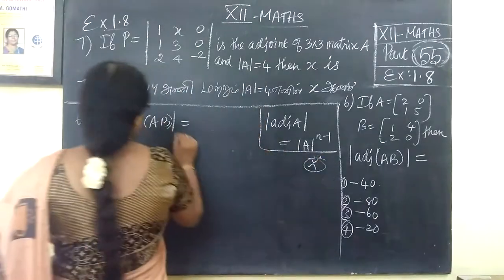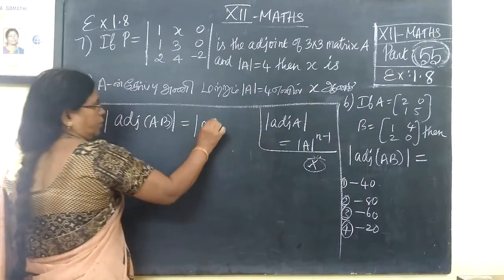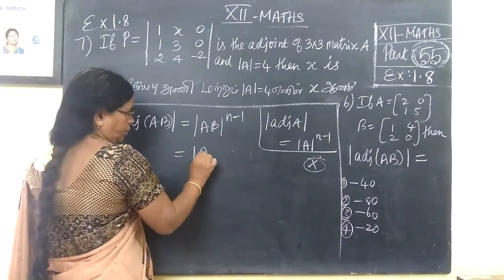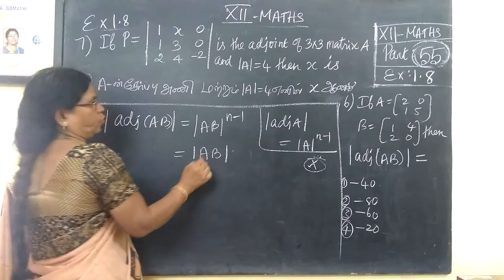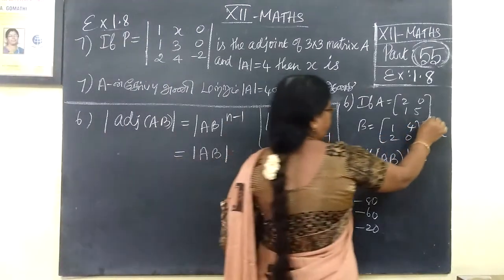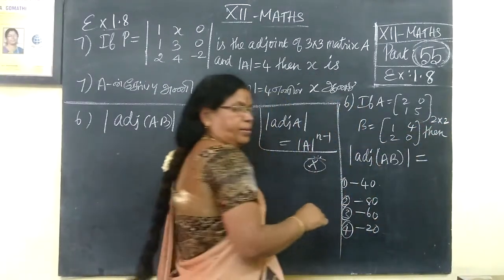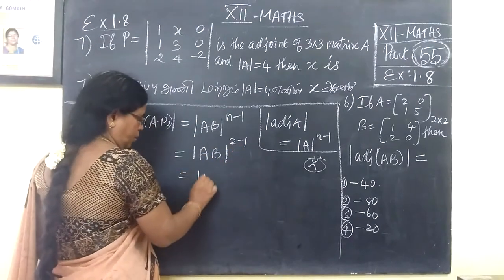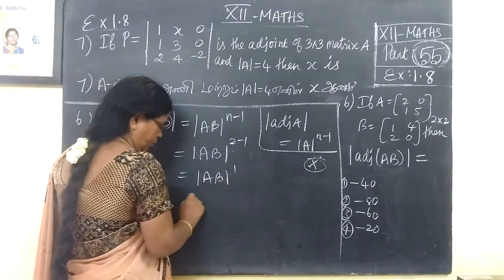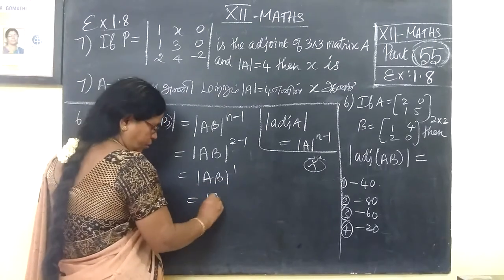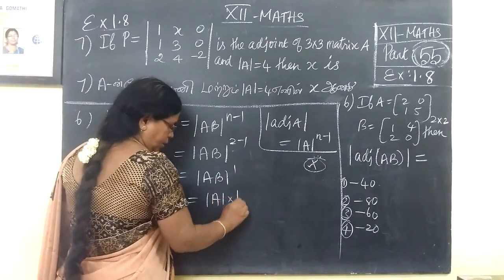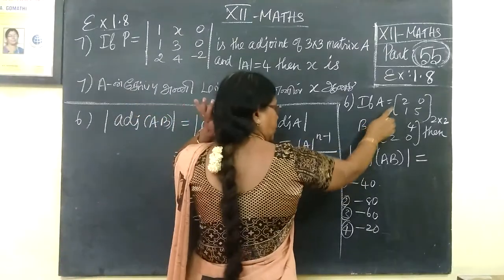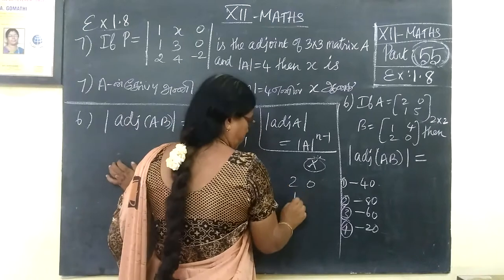Adjugate of A is equal to determinant of A raised to power n-1. Since the matrix is 2 by 2, n equals 2. So adjugate A equals determinant of A raised to 2 minus 1, which is determinant of A raised to 1. Determinant of A, it is 0, it is 5.